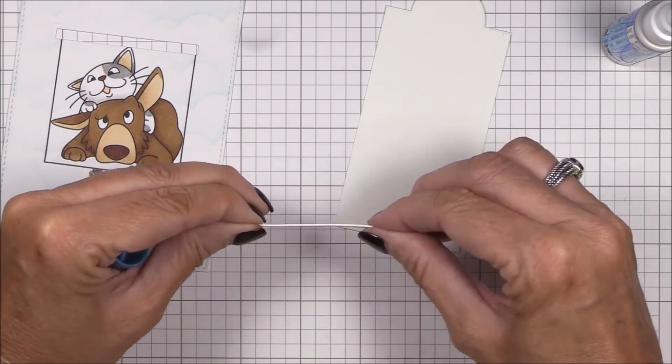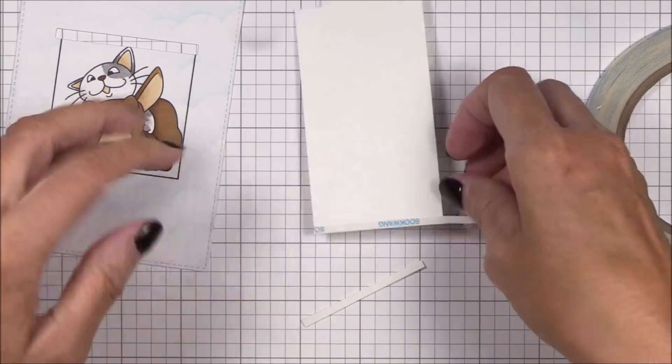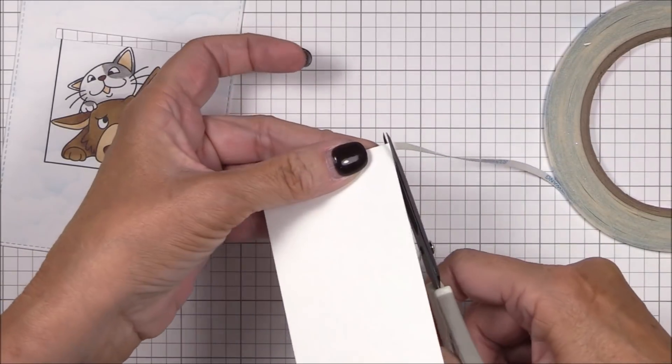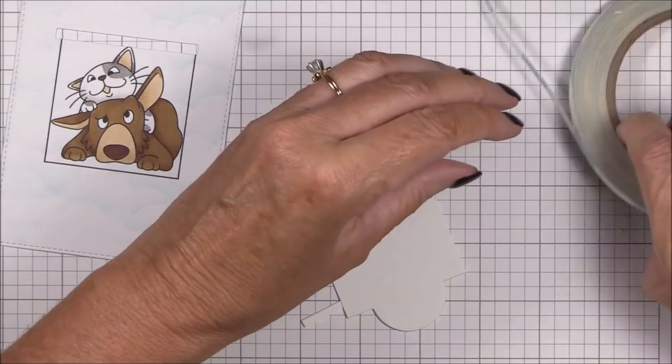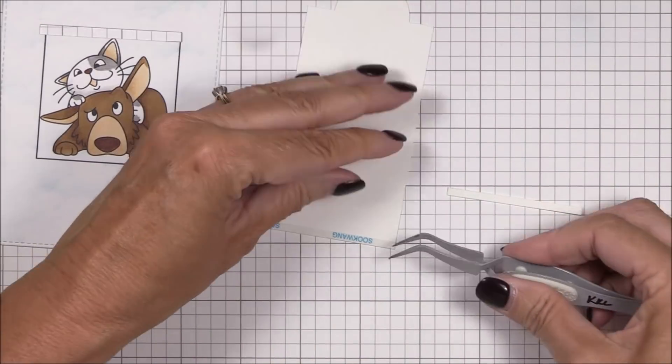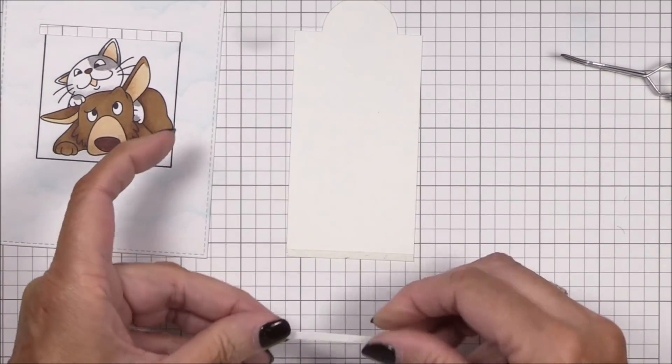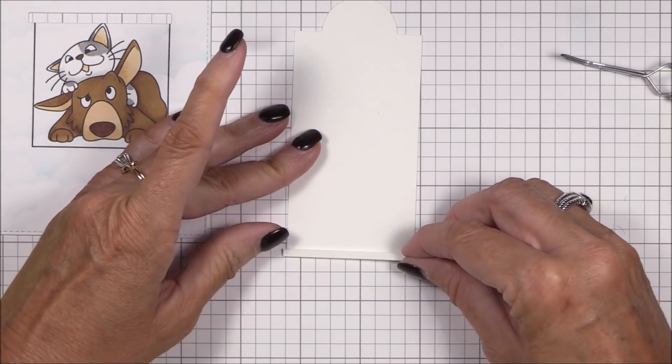I'm adhering two one eighth inch by two and a quarter inch strips together with a liquid adhesive and then I'll adhere those to the bottom of the slider with some one eighth inch double-sided tape, positioning them so that they overhang the right and left sides evenly. In theory those two little notches should be what stops the slider panel from coming completely out of the slot.